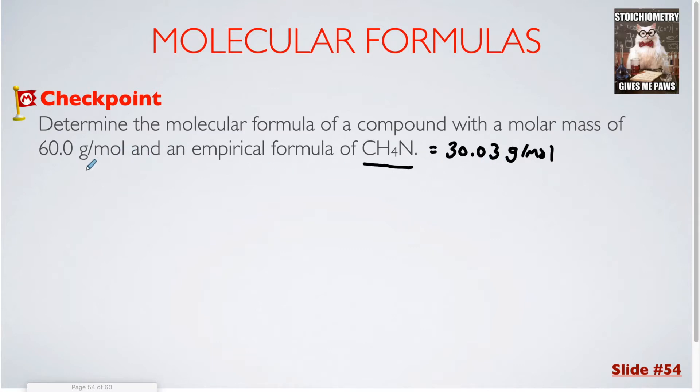They're telling me that the molar mass of the actual molecular formula is 60.0 grams per mole. So I'm going to take my 60.0 grams per mole and divide that by my 30.03. Now this doesn't come out to exactly 2 but it comes out to about 2. It's very close to a whole number. So what that means is that my molecular formula should be twice as big as the empirical formula I am currently looking at. So all I have to do is multiply each of these subscripts by 2.